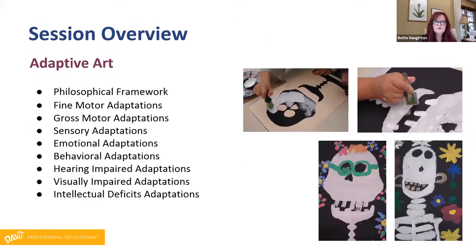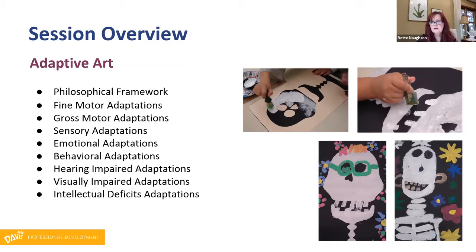Hello. Thank you all for joining us. I'm thrilled to meet you all. A little bit of the session overview: I'm Bette Naughton and I've been working with students with special needs for over 20 years. We're going to be talking about your philosophical framework, fine motor adaptations, gross motor adaptations, sensory adaptations, emotional behavior, adaptations for hearing impaired and visually impaired, and also intellectual deficits. In these pictures you can see a Day of the Dead project. I always try to do the same lesson for my able-bodied peers and then adapt it for my special needs students, giving them the scaffolding they need to be successful.